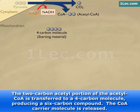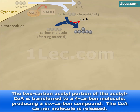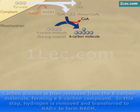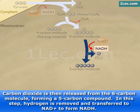The two-carbon acetyl portion of the acetyl CoA is transferred to a four-carbon molecule, producing a six-carbon compound. The CoA carrier molecule is released. Carbon dioxide is then released from the six-carbon molecule, forming a five-carbon compound. In this step, hydrogen is removed and transferred to NAD+ to form NADH.